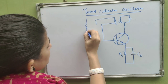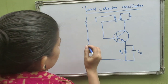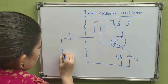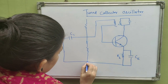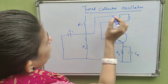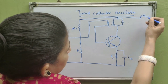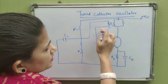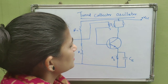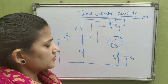The secondary of the transformer is connected to the base. R1 and R2 form the biasing or potential divider biasing. There is also a blocking capacitor. The line between L and L1 represents the mutual coupling of the two inductors. This completes the circuit diagram of the tuned collector oscillator.